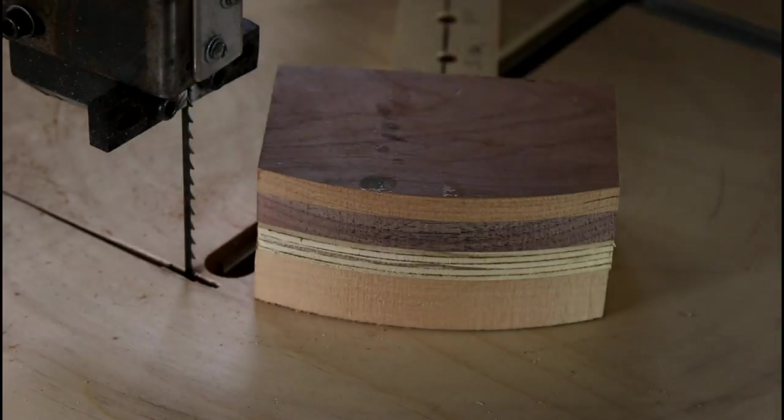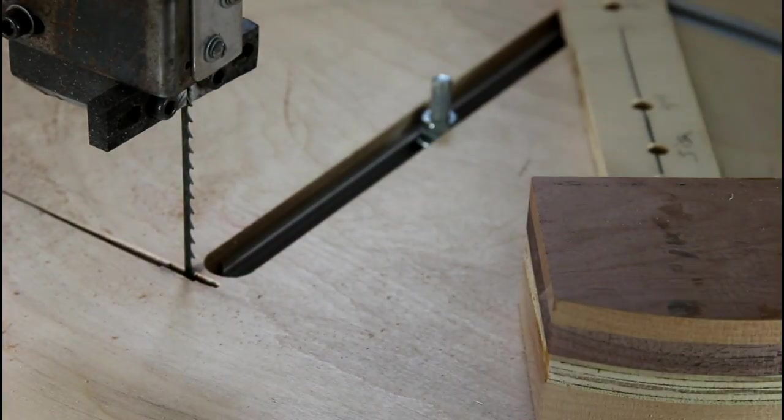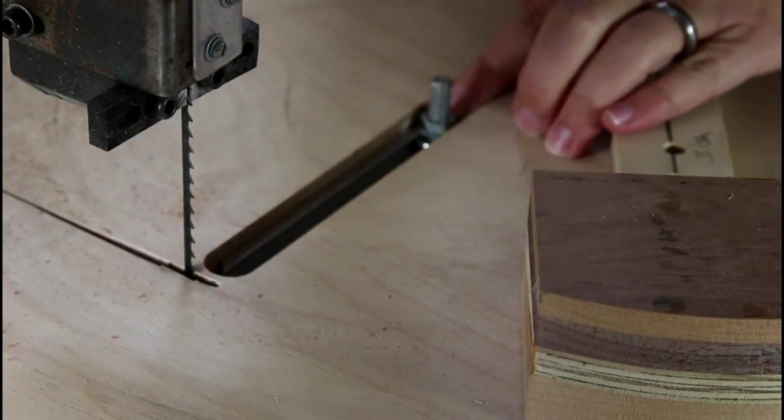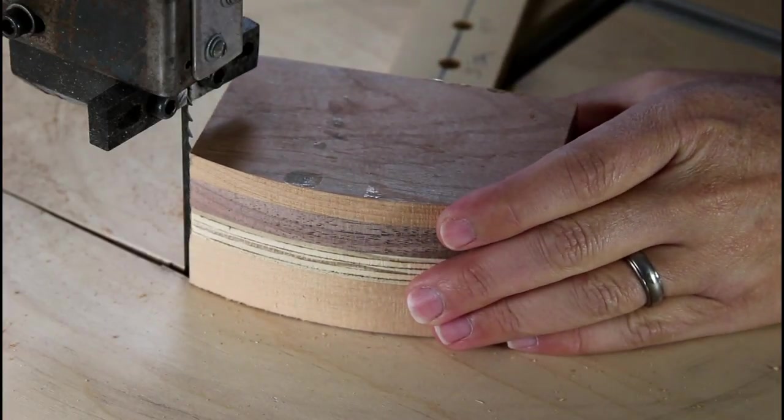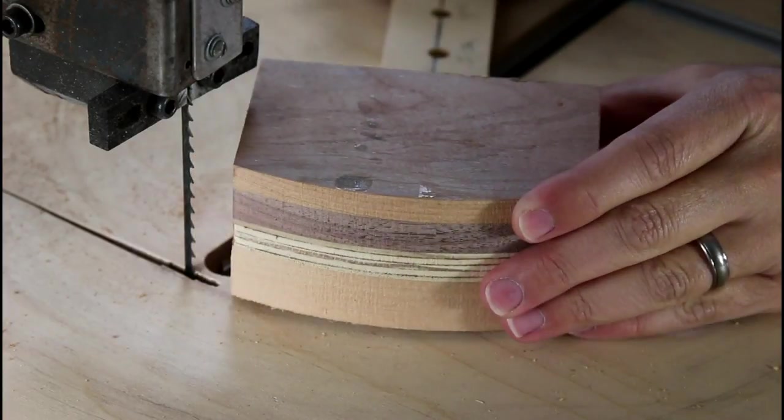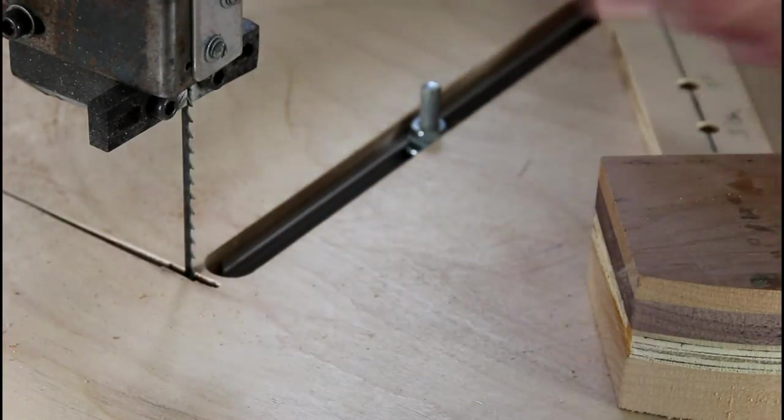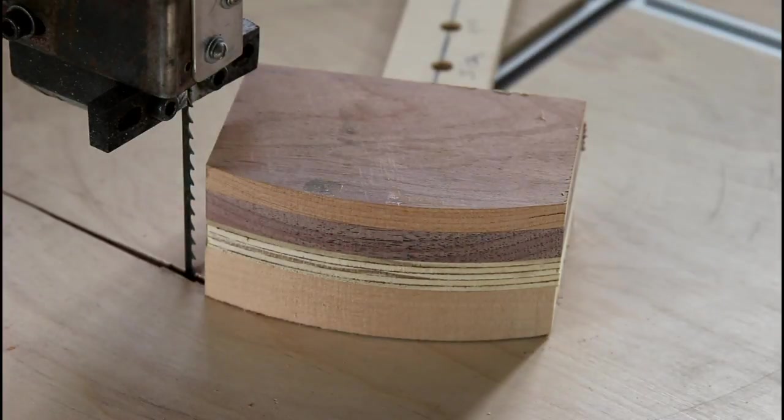Okay, that's much better. Now that we've got this all dialed in, all we have to do is start taking slices. So we loosen the pivot point, move it forward about an eighth of an inch, tighten it down, cut off a slice.